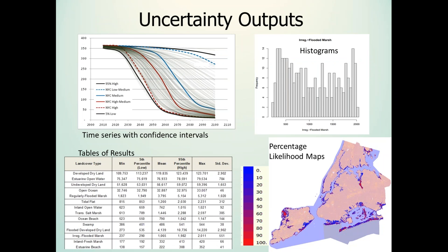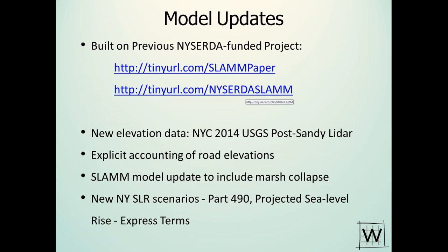There are a number of different ways to summarize uncertainty analysis results. Percentage likelihood maps have really been one of the most powerful tools we've been working with, and Marco is going to show you some of those in a few minutes. This project is built on a previous NYSERDA-funded project. There are a couple of URLs here — the top one is a publication in the literature, the bottom one is the report we produced for NYSERDA as a tiny URL, which is case-sensitive following the slash.